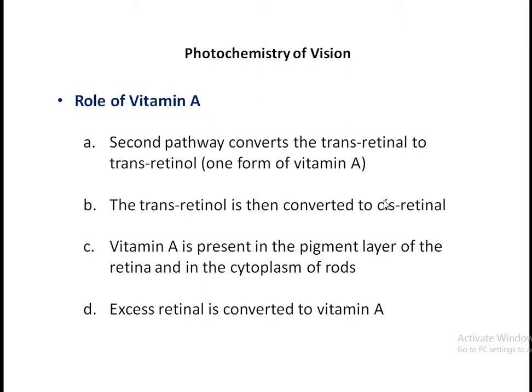Vitamin A is not only present in the pigment layer but also abundant in the cytoplasm of the rods. Excess retinol is converted to vitamin A. This is the reason that vitamin A is necessary for vision, especially at night. The abundant source of vitamin A is carrots, and that is why to improve vision you should eat more carrots.